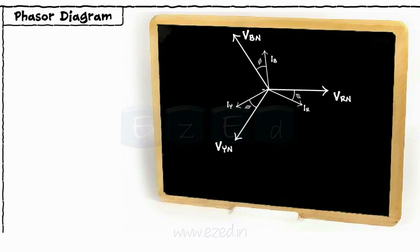Now the phasor Vnr is drawn opposite to the phasor Vrn, the phasor Vny is drawn opposite to the phasor Vyn, and the phasor Vnb is drawn opposite to the phasor Vbn as shown.